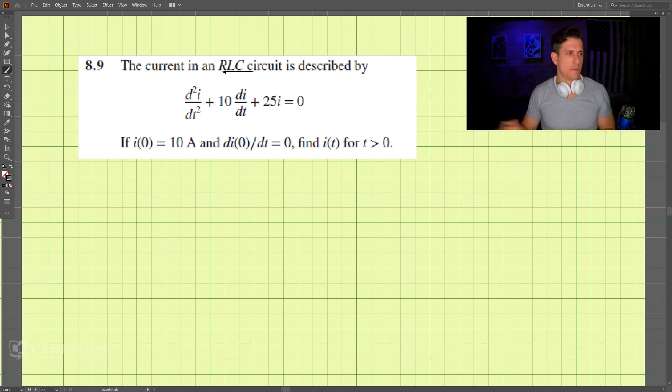How do we solve this problem? Well, we're given the initial conditions that we know the current at time 0 is 10 amps, and the first derivative di/dt at time 0 is also 0. So we're finding i(t) for t greater than 0.